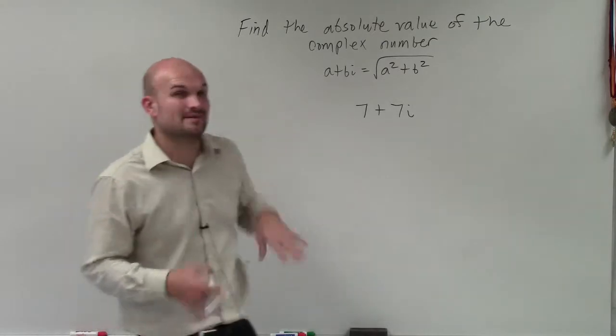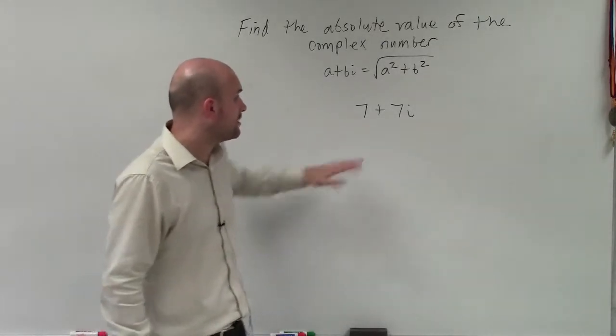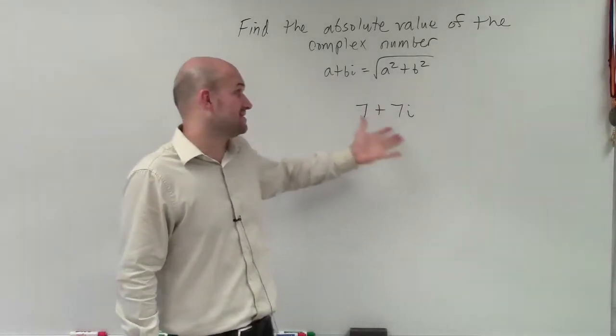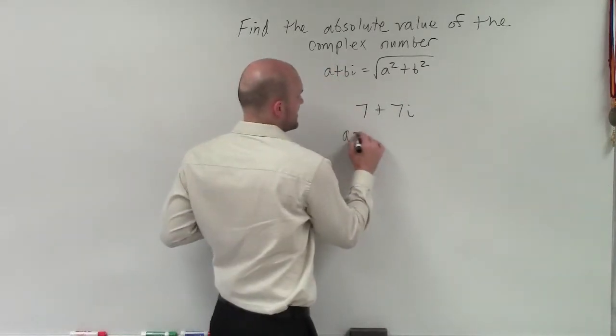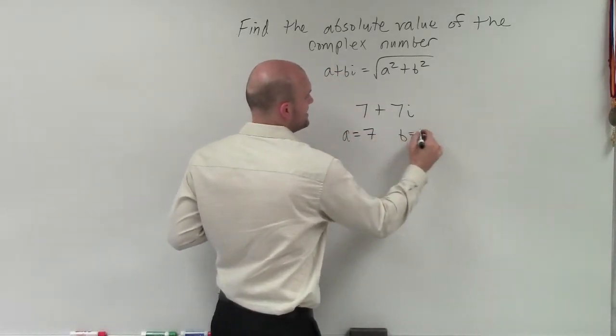OK, so this is going to be a very common thing that's going to happen quite a bit. Whenever we have our a and our b are going to be the same when trying to find the absolute value. So in this case, I have a equals 7 and then b equals 7.